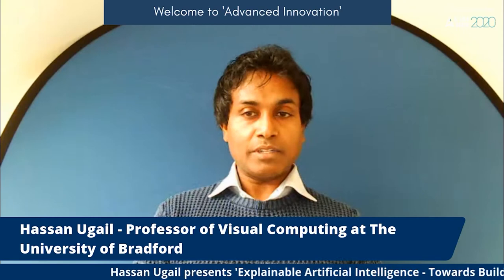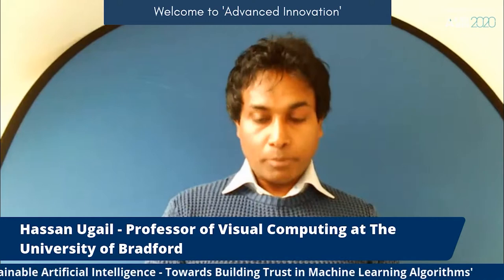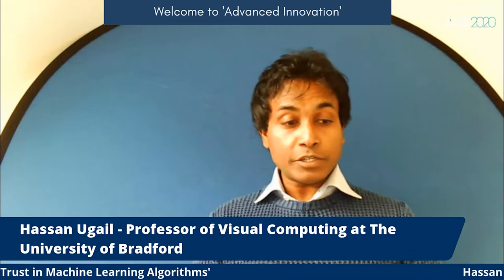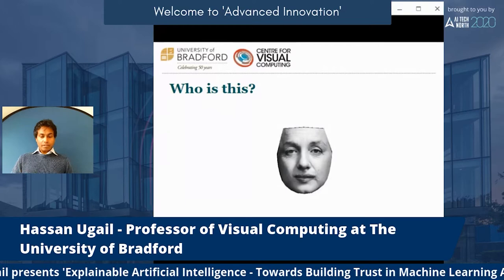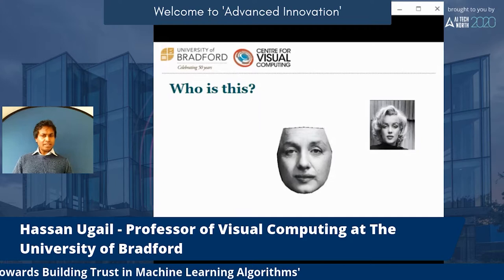I will start with an interesting example. If I show you a face and ask who this is, you might be able to somehow guess this person. If I give you a hint — is this Marilyn Monroe? — you might say, yeah, probably there are some characteristics of Marilyn Monroe in this face.